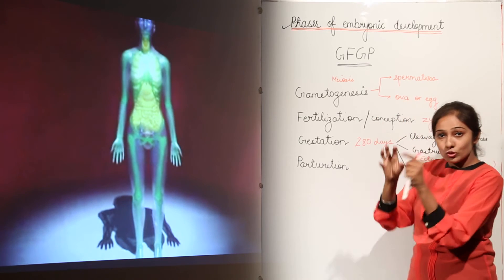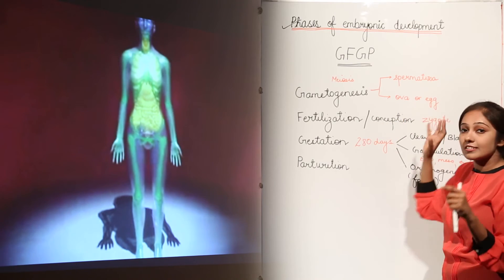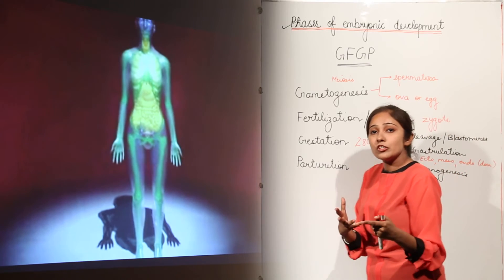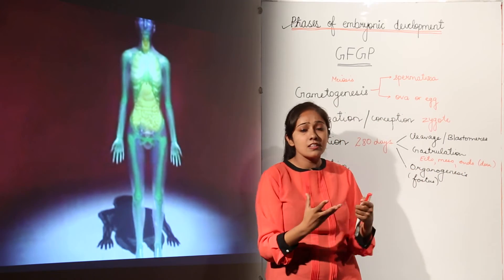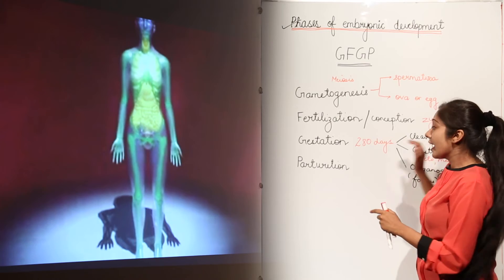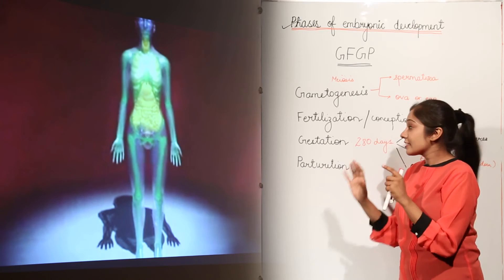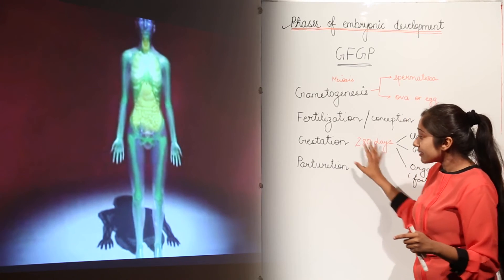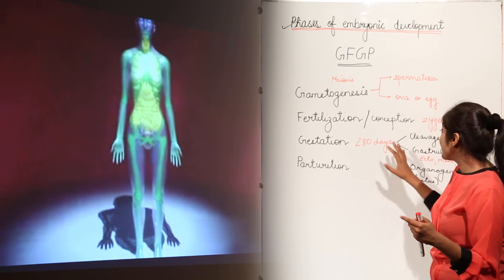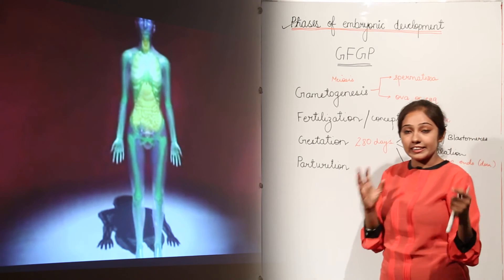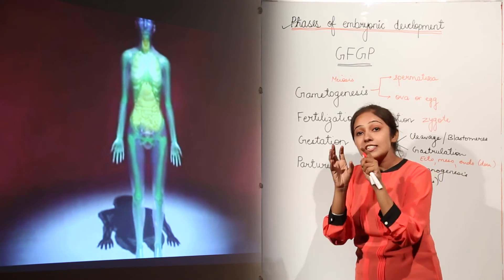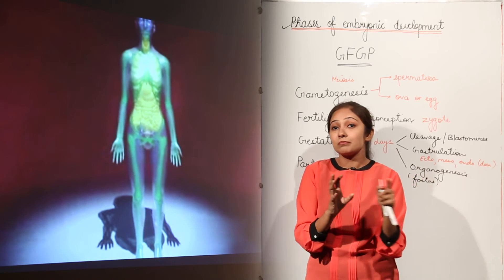Sperms and ova are going to fuse to form zygote. This zygote is going to show cell divisions, then formation of complete organism by the formation of these organs. And then when this is going to be complete, this is going to come out. And this blastomere stage, that multi-cell stage has those all cells which are going to form the complete organism.